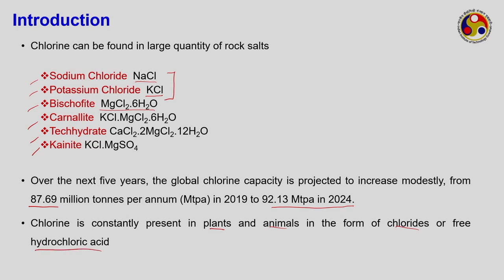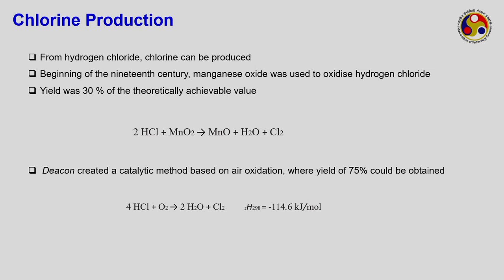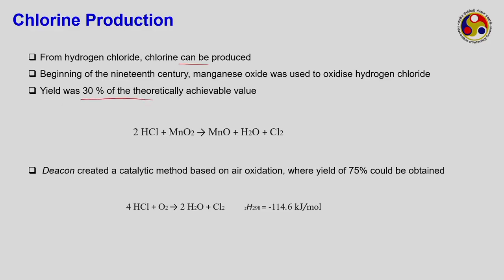For chlorine production, hydrogen chloride is used as the raw material. At the beginning of the 19th century, manganese oxide was used to oxidize HCl. Two moles of hydrogen chloride react with one mole of manganese oxide to form manganese oxide, water, and chlorine gas. However, the yield was very low — only 30% of the theoretically achievable value — due to the rate-determining slow step.